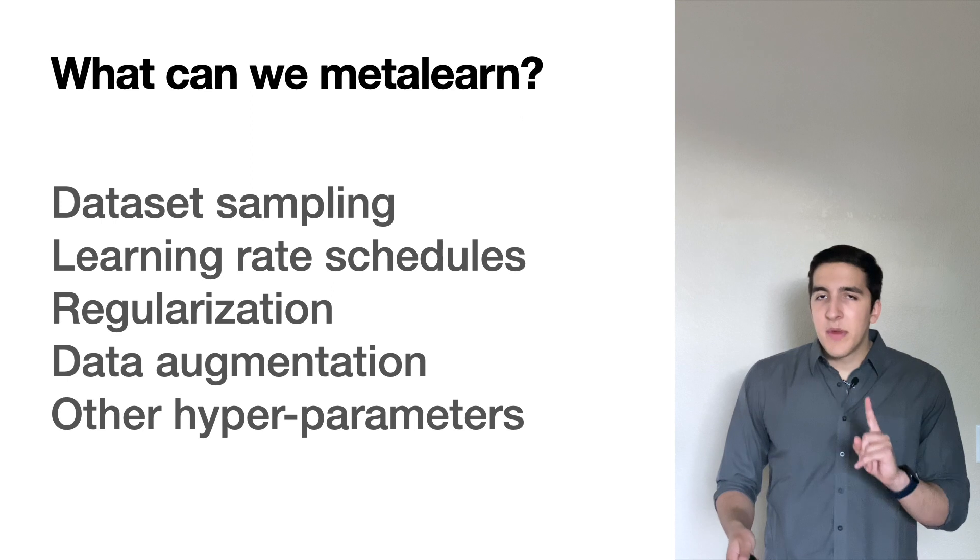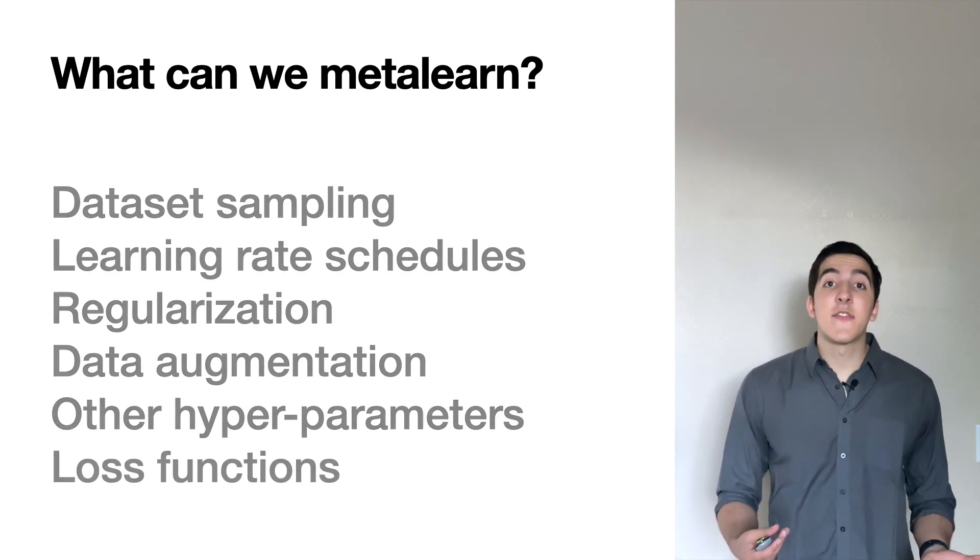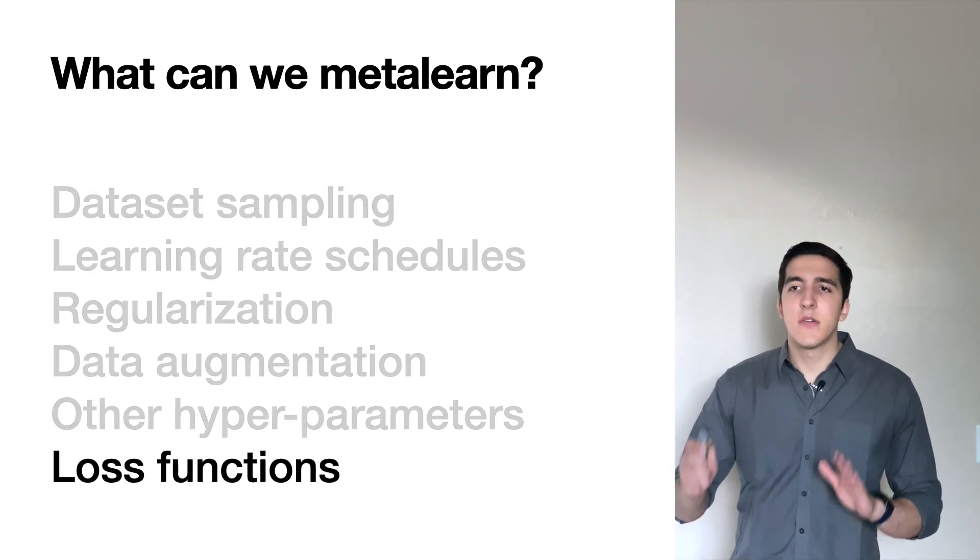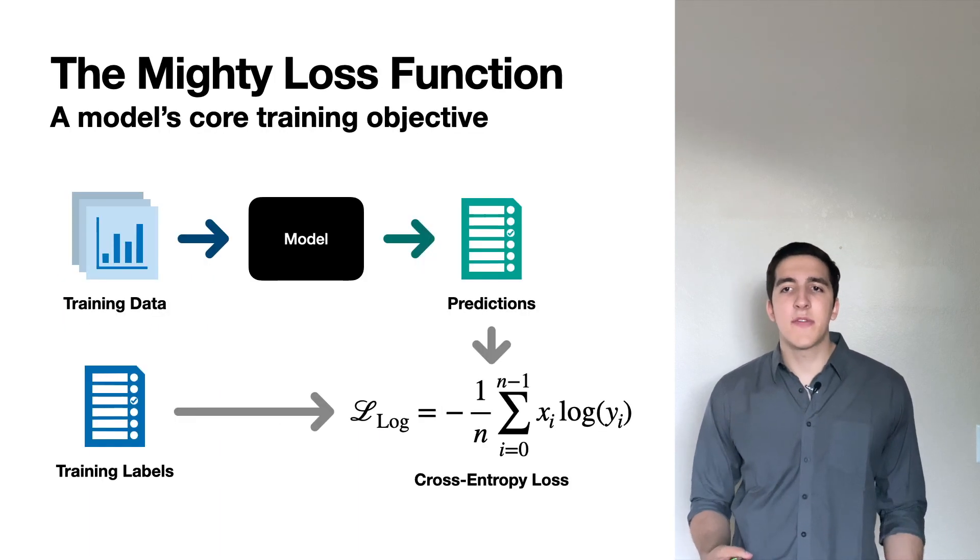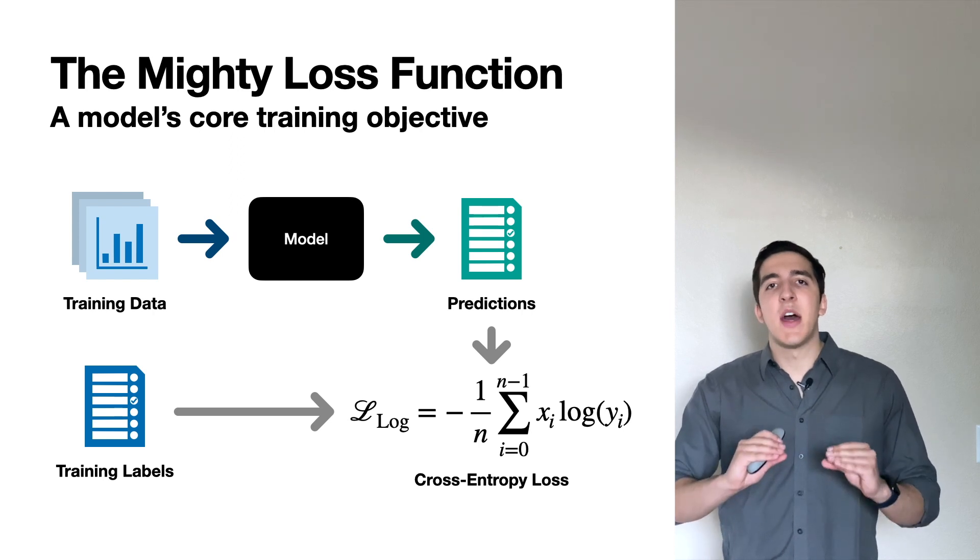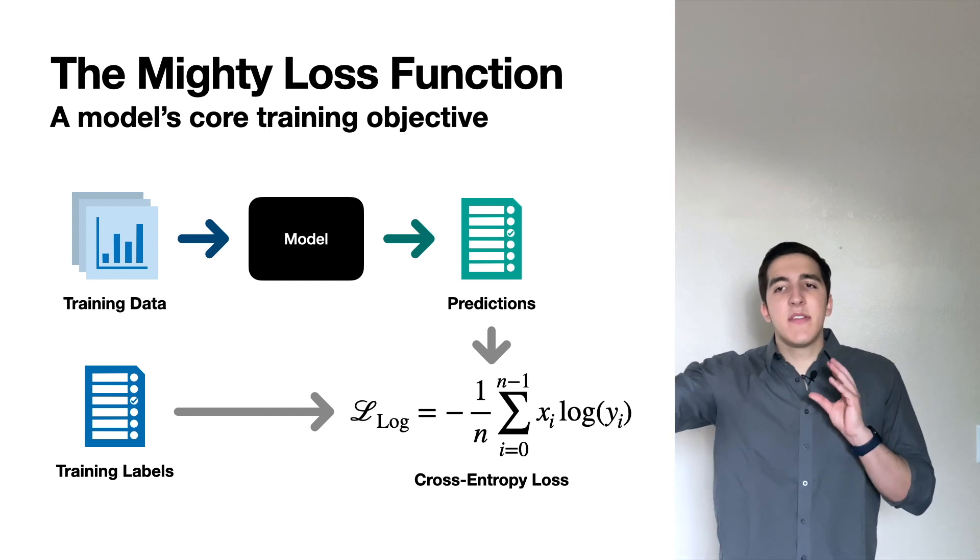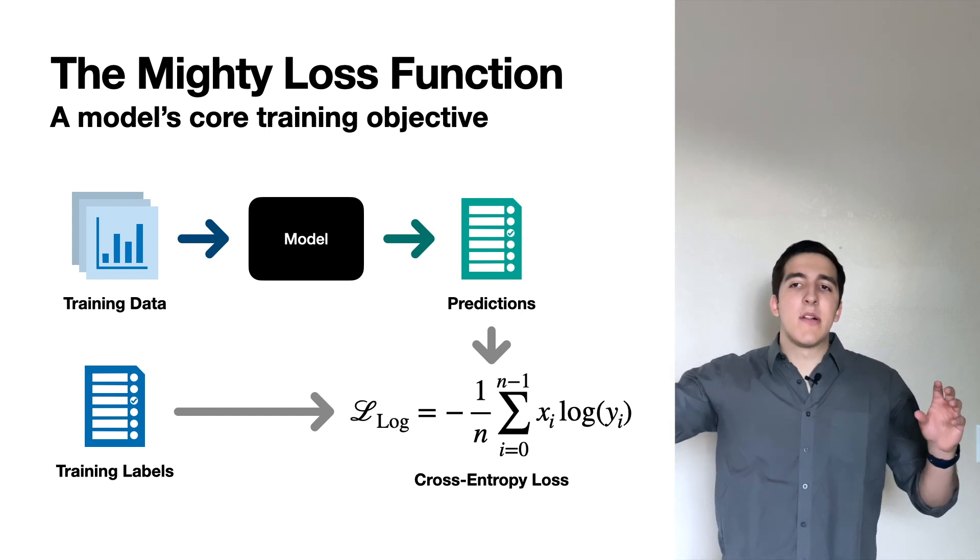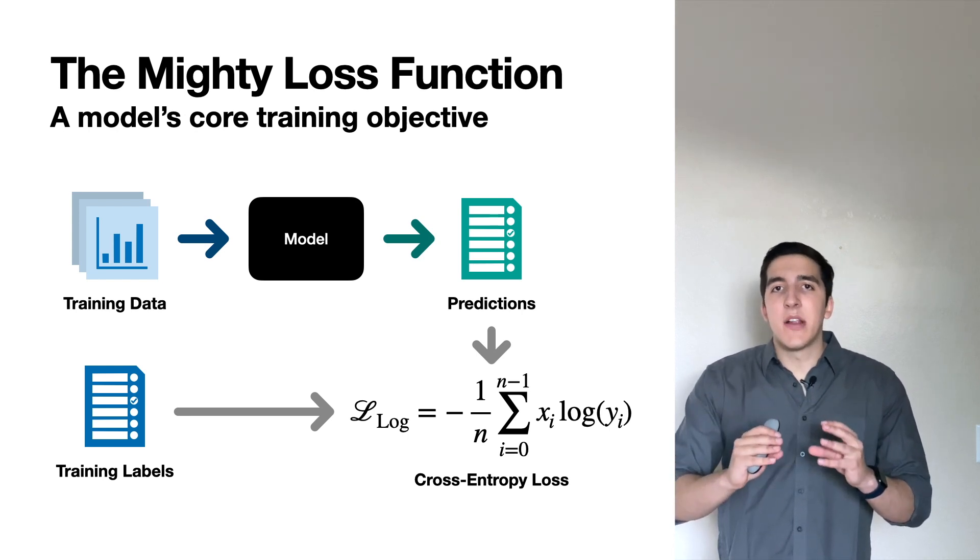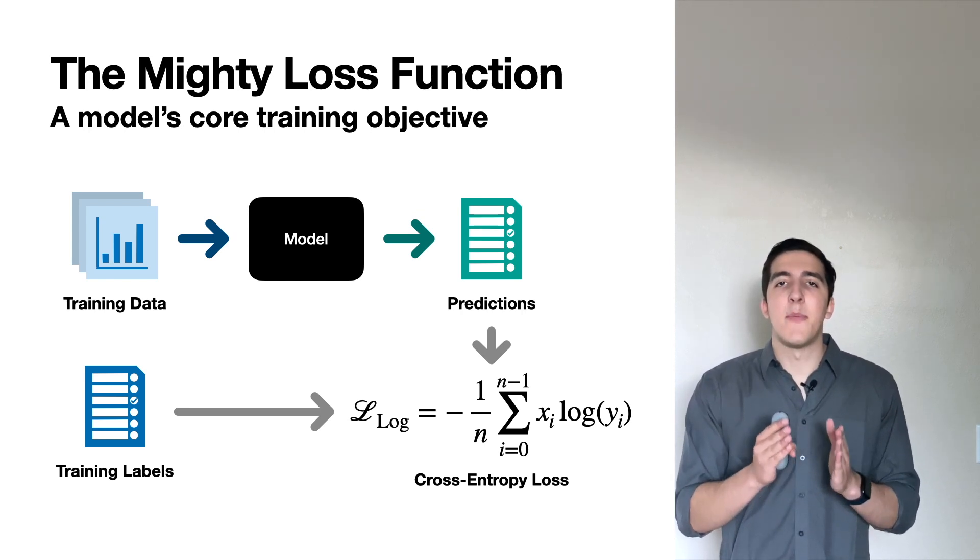And meta-learning is a very wide field and it essentially just tackles how to optimize these different aspects automatically. And you can meta-learn anything from dataset samplings to regularization, data augmentation pipelines, and other hyperparameters. But there's one thing that we found was missing from this list and it was a bit strange that it was missing. Loss functions. So we want to meta-learn loss functions. So really quick review, why do we want to do loss functions? Loss functions embody the core training objective of a deep network or a neural network overall.